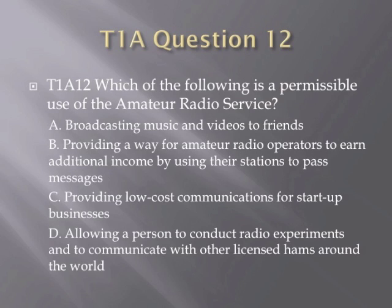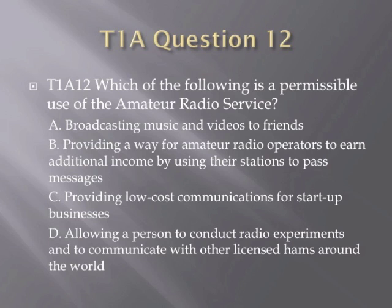Question 12. Which of the following is a permissible use of the amateur radio service? A. Broadcasting music and videos to friends. B. Providing a way for amateur radio operators to earn additional income by using their stations to pass messages. C. Providing low-cost communications for start-up businesses. Or D. Allowing a person to conduct radio experiments and to communicate with other licensed hams around the world. Question 13. What is the FCC Part 97 definition of telecommand? A. An instruction bulletin issued by the FCC. B. A one-way radio transmission of measurement at a distance from the measuring instrument. C. A one-way transmission to initiate, modify, or terminate functions of a device at a distance. Or D. An instruction from a VEC.